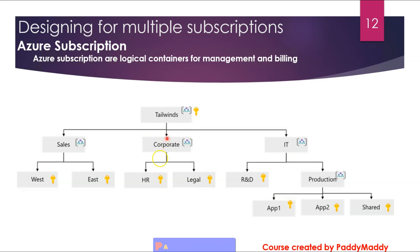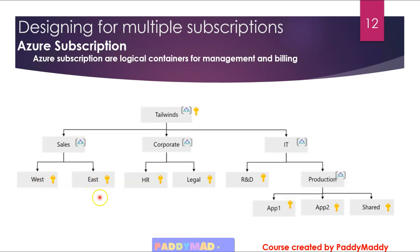Also consider network topologies. VNets cannot communicate from one subscription to another subscription, so you need to think about VNet peering or VPNs that need to be created for your workloads to communicate with each other when deciding whether a new subscription is required.